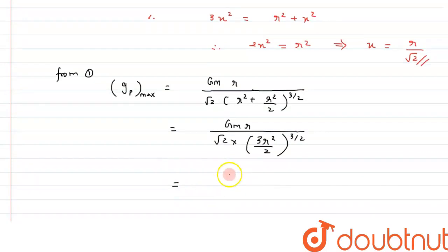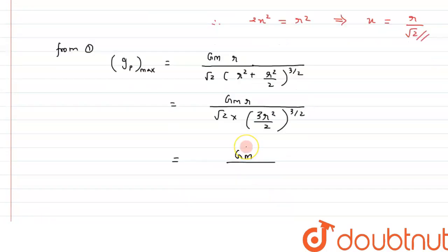answer as, this can be written as finally GM divided by, we are left with 2GM upon 3 root 3 R². So this is the value of gravitational intensity maximum at point P we are getting.